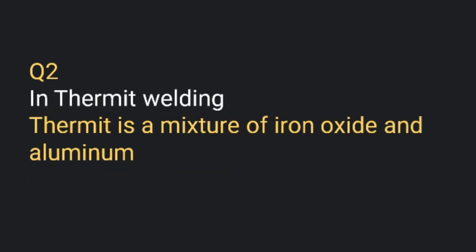In thermit welding, thermit is a mixture of iron oxide and aluminum, and it is generally used for the welding of railway tracks because a high amount of heat is produced during the reaction of aluminum and iron oxide.